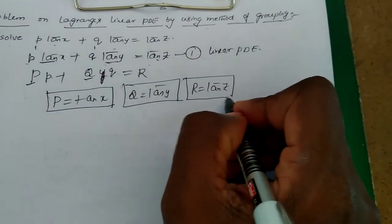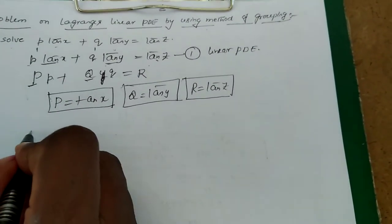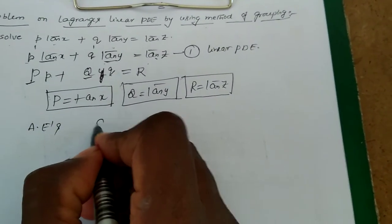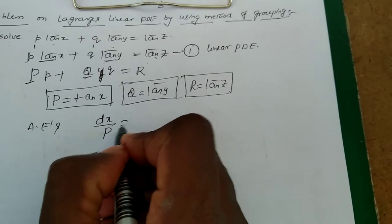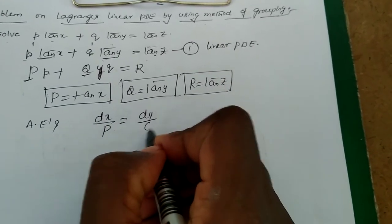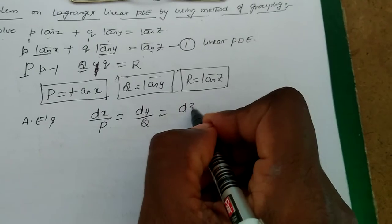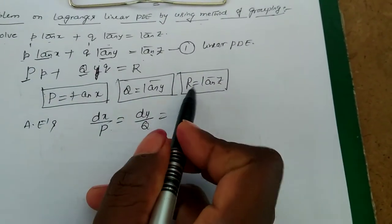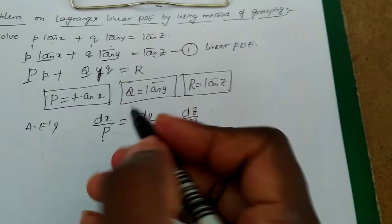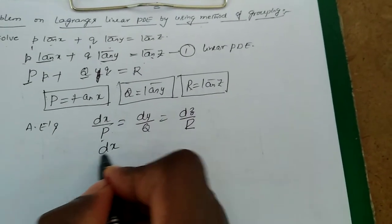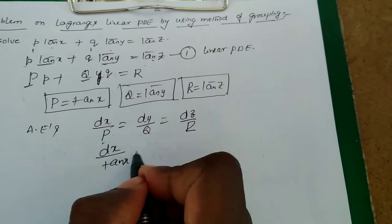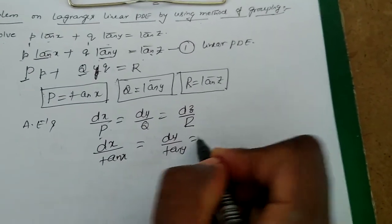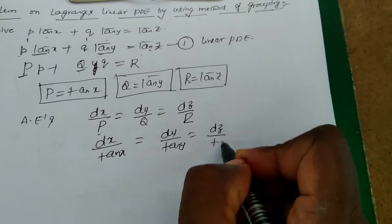After finding P, Q, R, we write the auxiliary equations: dx by capital P equal to dy by capital Q equal to dz by capital R. Substituting the values of P, Q, R, we get dx by tan x equal to dy by tan y equal to dz by tan z.